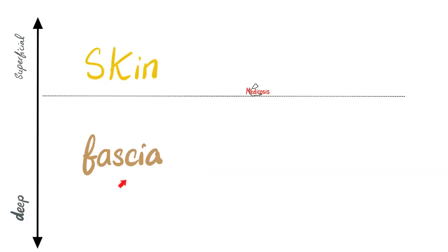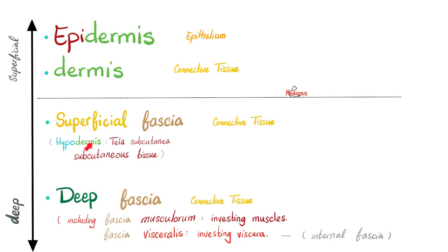Superficial to deep — skin, then fascia. The fascia is made of superficial fascia and deep fascia. Superficial fascia is the same as hypodermis, tela subcutanea, and subcutaneous tissue. Deep fascia is deeper connective tissue. Some of them will invest muscles — we call them fascia musculorum. Some of them will surround viscera — we call them fascia visceralis. By the way, in medicine, the word visceral is synonymous with the word splanchnic.